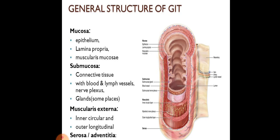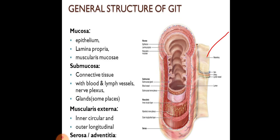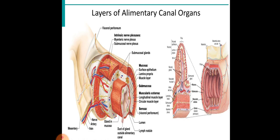Below or outside the mucosa we have submucosa. It is made up of connective tissue, blood vessels, lymphatic vessels, nerve plexuses, and at some places glands are also found. Outside the submucosa we have muscularis externa, composed of inner circular and outer longitudinal smooth muscle fibers. Then outside that we have the serosa, also called adventitia, formed by the mesentery — that is the peritoneal fold.